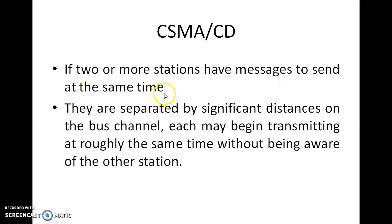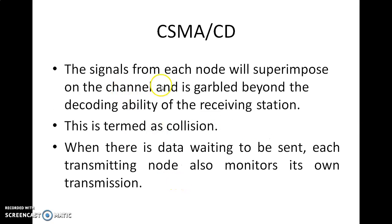If two or more stations have messages to be sent at the same time and they are separated by a significant distance on the bus channel, each may begin transmitting at roughly the same time without being aware of the other. Signals from each node will superimpose on the channel and become garbled beyond the decoding ability of the receiving station.